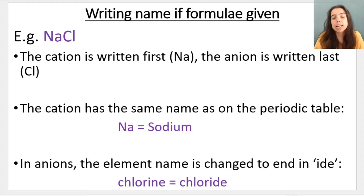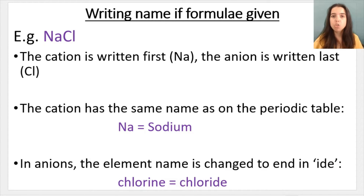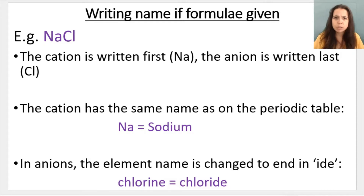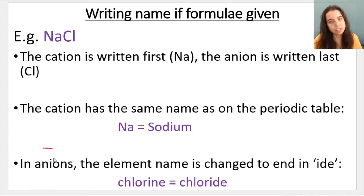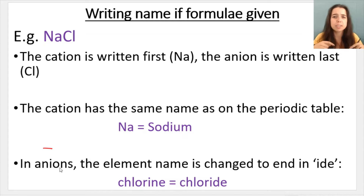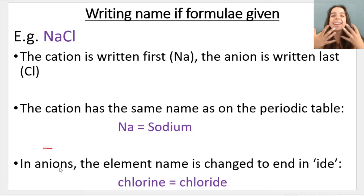Then, after the cation comes the anion. Remember, the anion is generally formed from the non-metal. Now remember, anions are negative ions — because onions make you cry, sounds like anions. So it's negative because it has gained electrons.